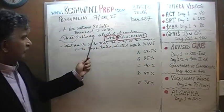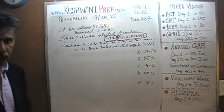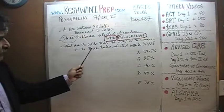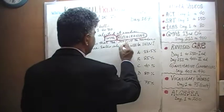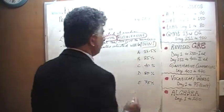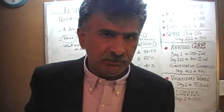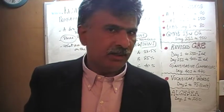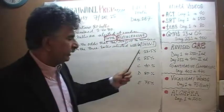Three balls are selected at random with replacement. The question is very simple and straightforward: what are the odds that the sum of the three numbers is going to be even? The three balls picked at random with replacement — what are the odds that when we take the sum of those three numbers, the sum turns out to be even?